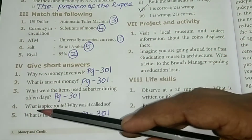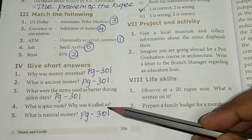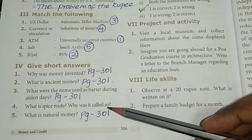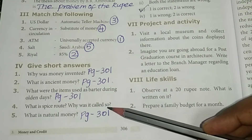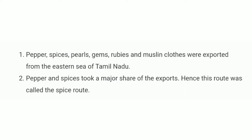Fourth question: what is the spice route? Why was it called that? The answer: pepper, spices, bells, gems, rupees, and muslin clothes were exported from the eastern coast of Tamil Nadu. Pepper and spices took a major share of the export. Against this, the route was called the spice route.